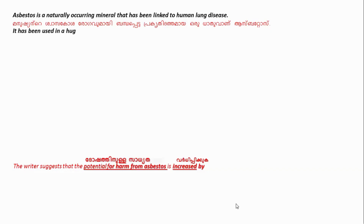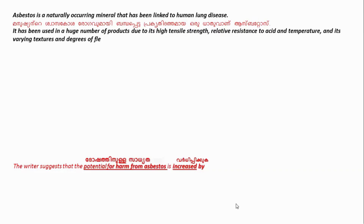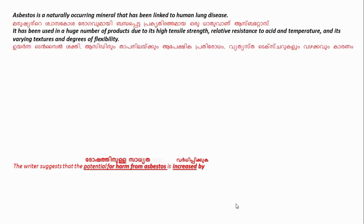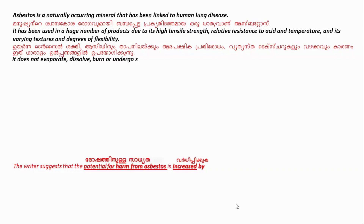If you look at the next line, you will see it has been used in a huge number of products due to its high tensile strength, relative resistance to acid and temperature, and its varying textures and degree of flexibility. This is saying that asbestosis material is being used in a huge number of products due to these qualities that it has.